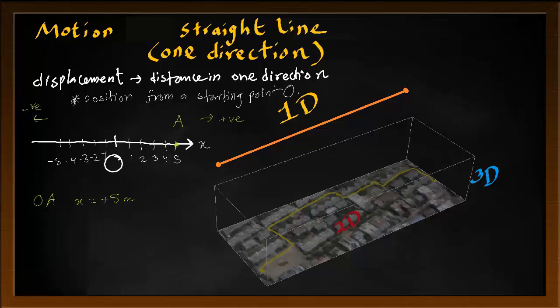The next question is: what is the displacement for point B? We are moving in the opposite direction. The displacement for OA was positive; the displacement from O to B would be negative because it's moving in the opposite direction. The value is still 5 meters. So the displacement OB would be minus 5 meters. The distance in both cases is 5 meters.